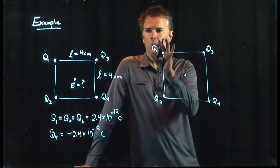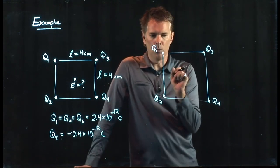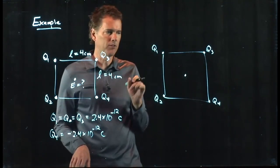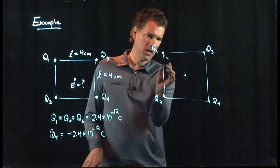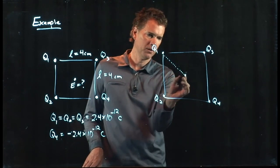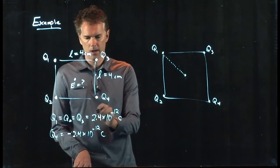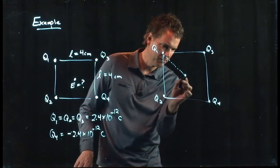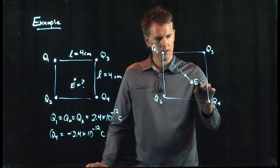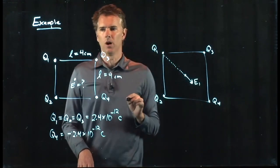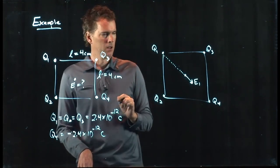Let's think about q1 for a second. At this position right here, what direction is the electric field from q1? It has to be along the line between the two, and q1 was a positive charge. Positive means the electric field is going to point away from it. So that is E1, that's the electric field from q1.